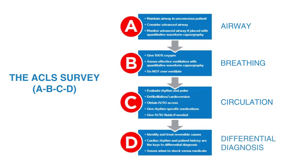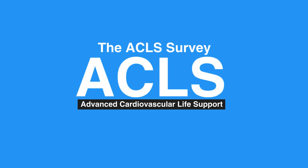Last is D, which stands for differential diagnosis. Start with the most likely cause of the arrest and then assess for less likely causes. Treat reversible causes and continue CPR as you create a differential diagnosis. Stop only briefly to confirm the diagnosis or to treat reversible causes. Minimizing interruptions in perfusion is key. This concludes our lesson on the ACLS survey.